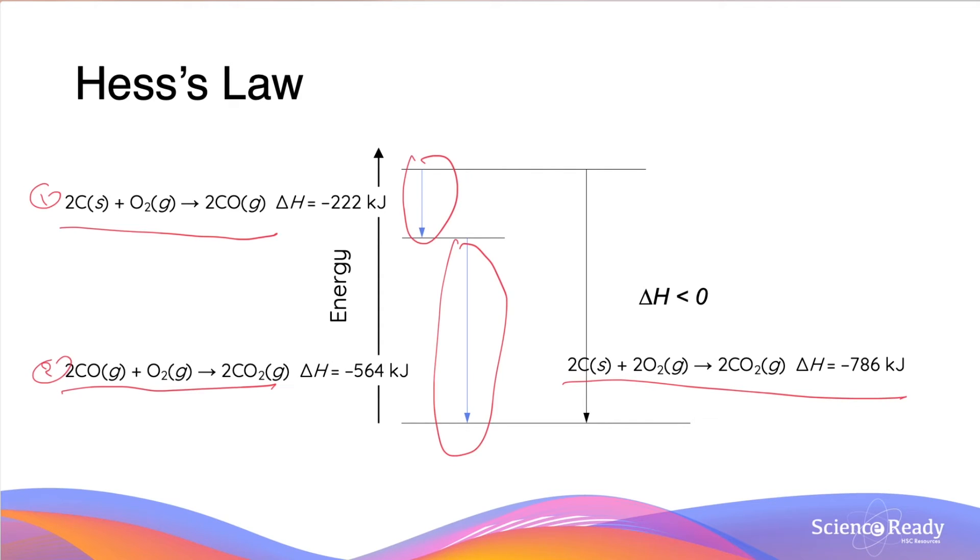Similarly, if we look at this equation on the right hand side with the black arrow, this is a one-step equation and we have the exact same enthalpy change between the two of them.